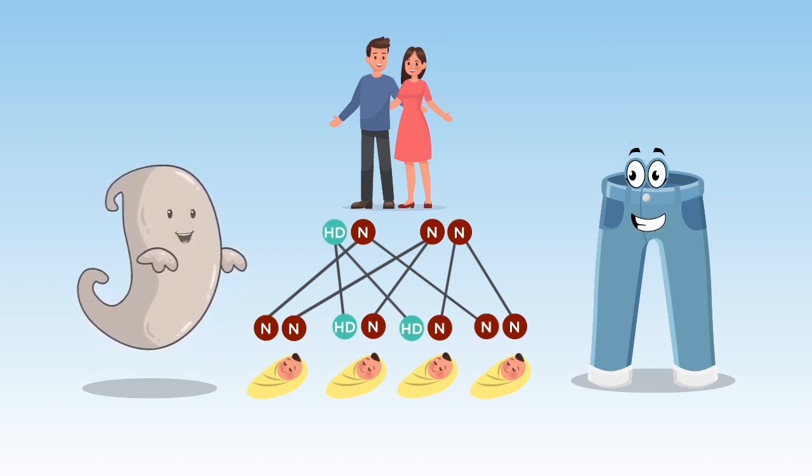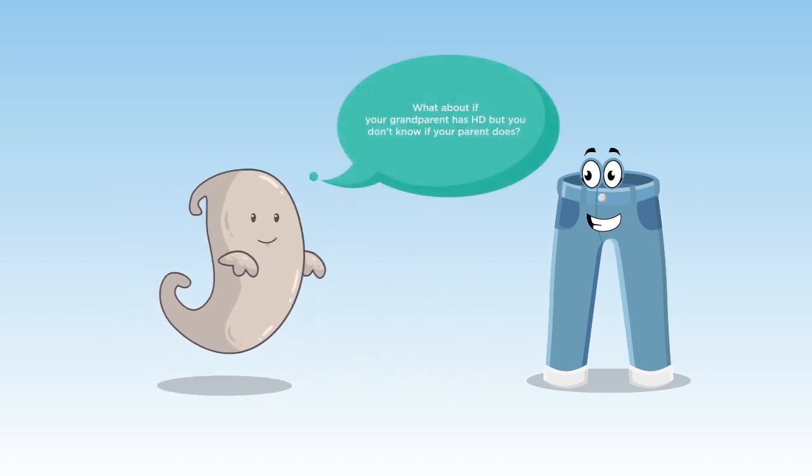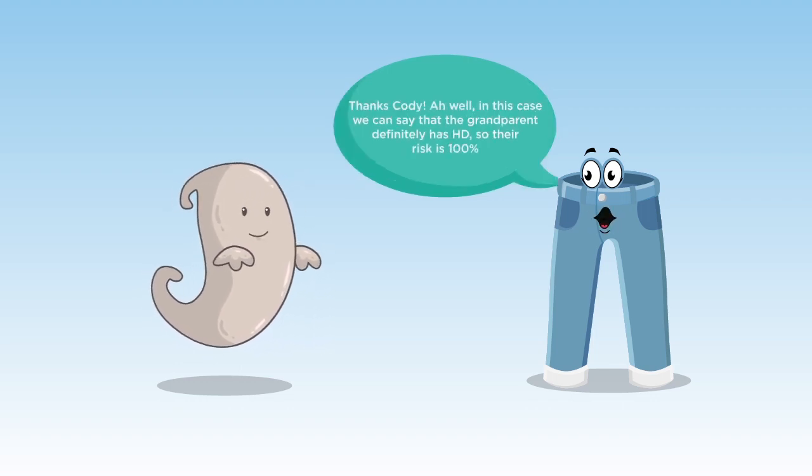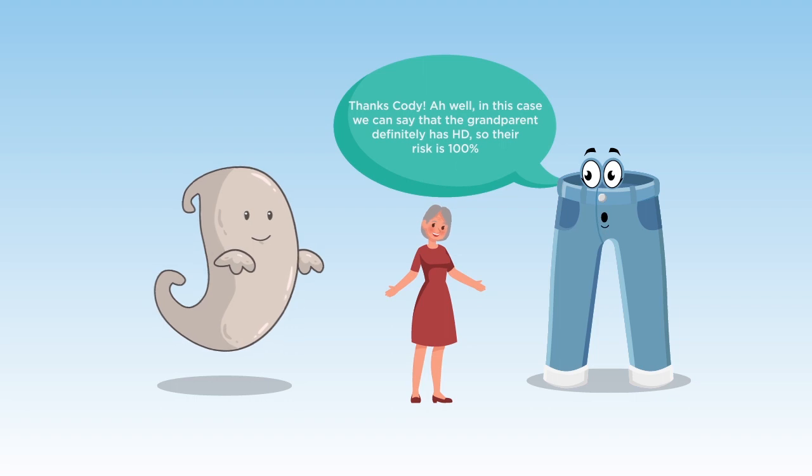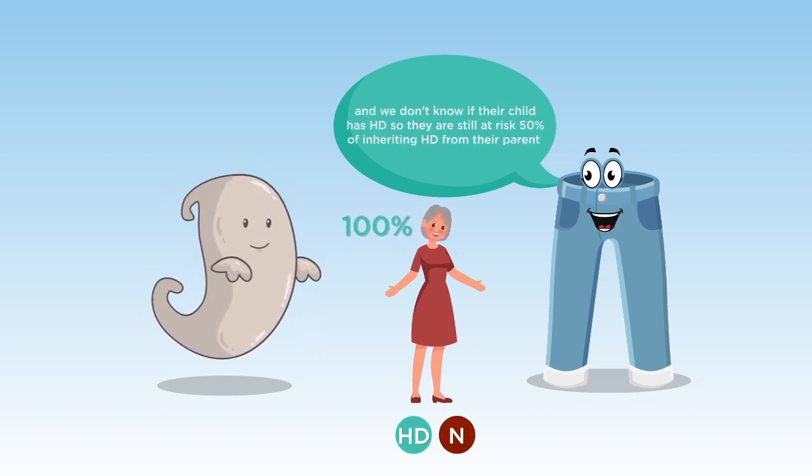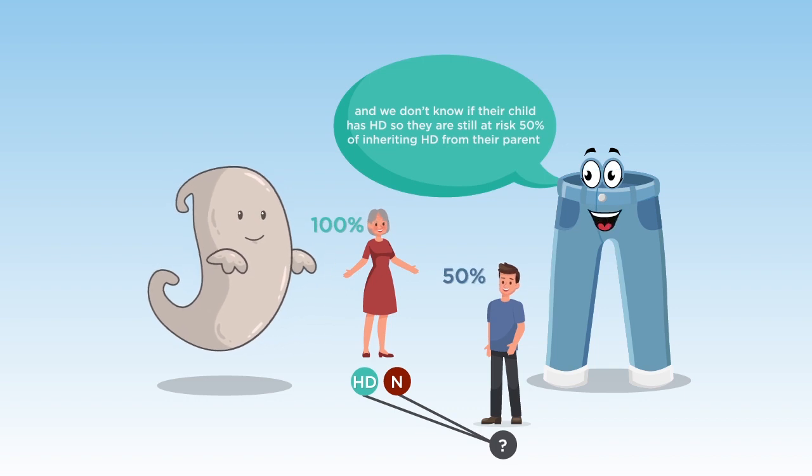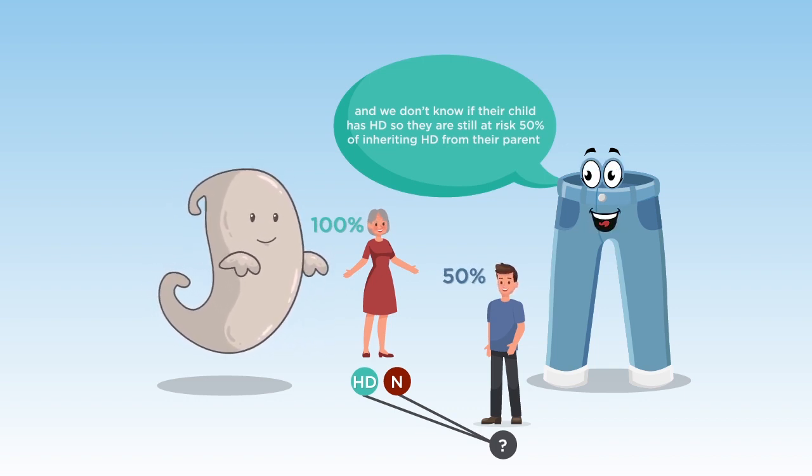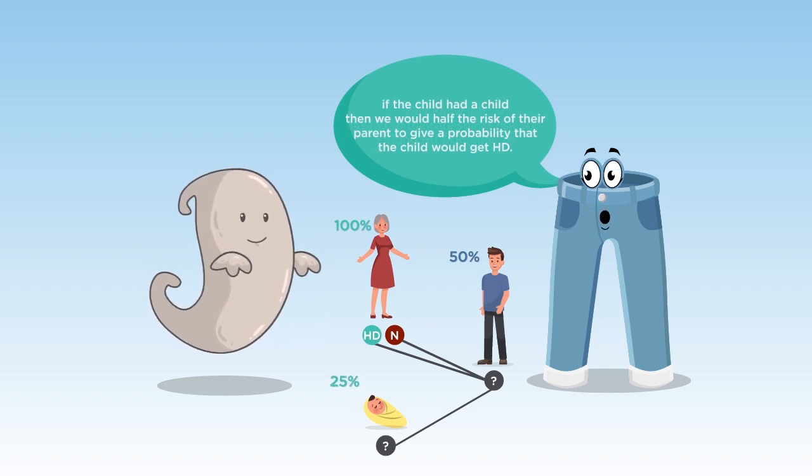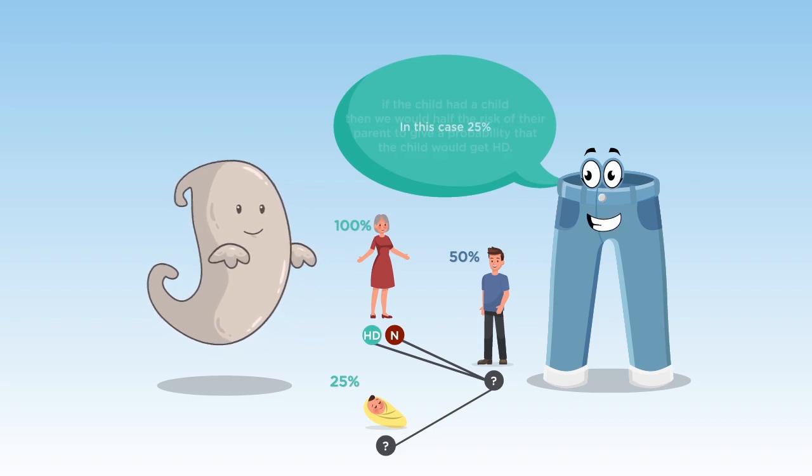Nice work, Gene. What about if your grandparent has HD, but you don't know if your parent does? What kind of risk do people have in that situation? Thanks, Cody. Well, in this case, we could say that the grandparent has HD, so the risk is 100%, and we don't know if their adult child, the parent has HD, so they are still at risk 50% of inheriting HD. If they had a child, then we would half the risk of their parent to give a probability that the child would get HD. In this case, 25%.